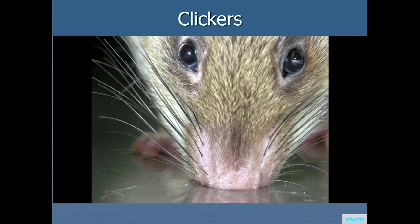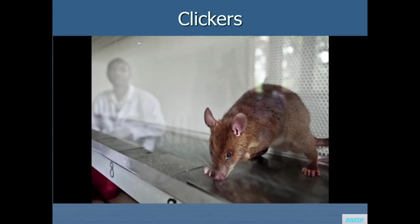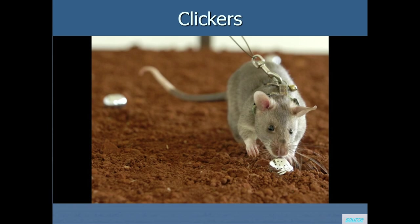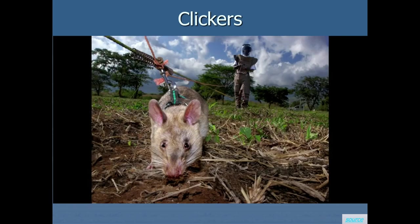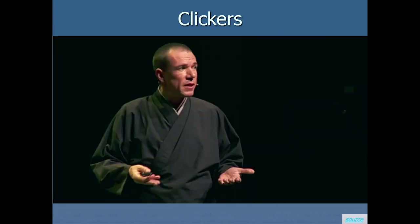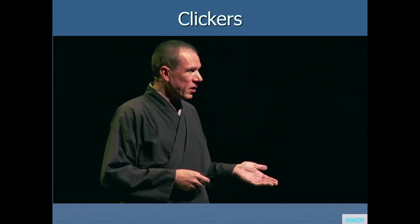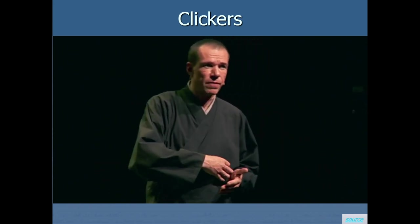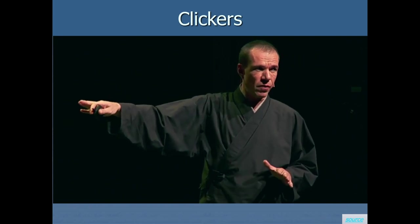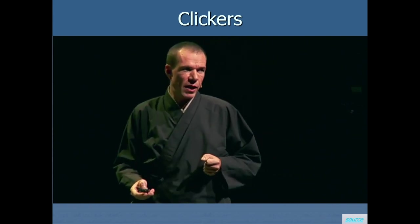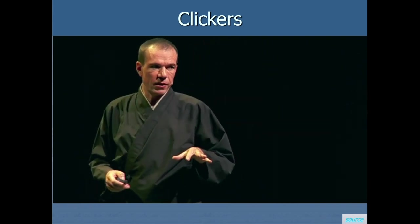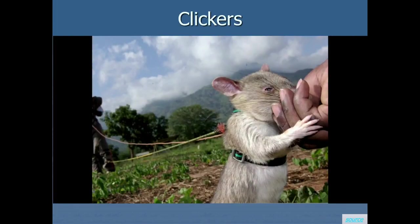The animal learns to stick its nose in a hole under which a target scent is placed for five seconds — which is long for a rat. Then the task becomes more difficult: finding the target smell in a cage with up to ten holes. Then the animal learns to walk on a leash in the open and find targets. In the next step, animals learn to find real mines in real minefields, and they are tested and accredited according to international mine action standards — just like dogs have to pass a test.